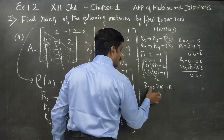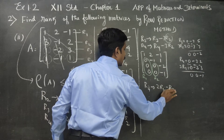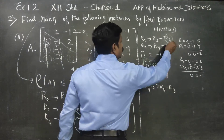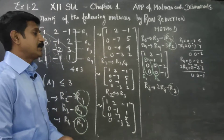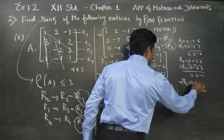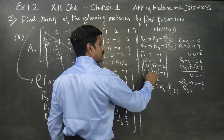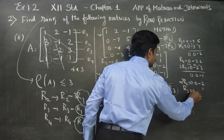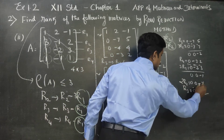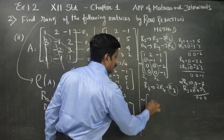2 times R4: R4 is equal to 2 times R4. 2 times R4 gives 0, 0, minus 2. R3 is 0, 0, minus 2. 2 times R4 minus R3: minus minus is plus, so 0, 0, 0.